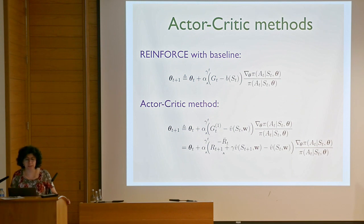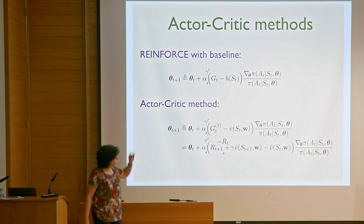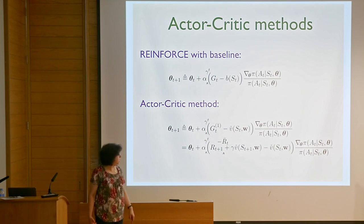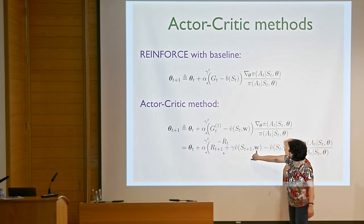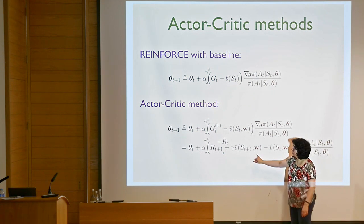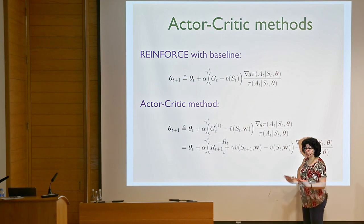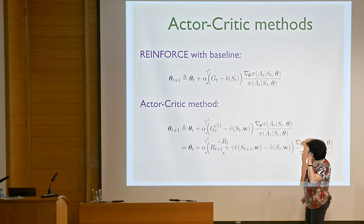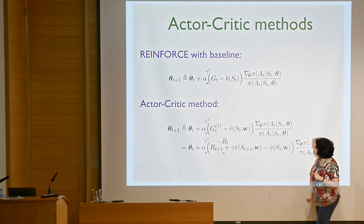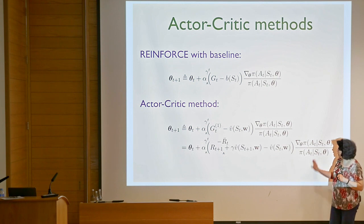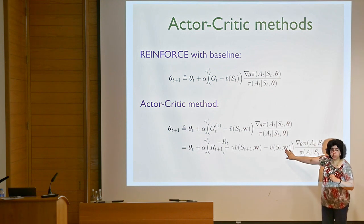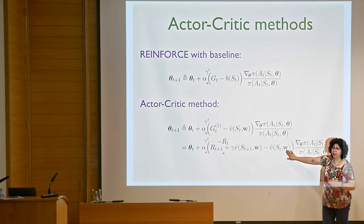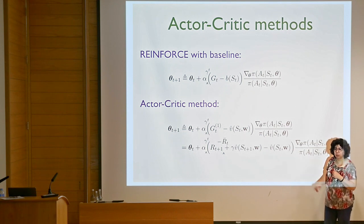In actor-critic methods, instead of just using the Monte Carlo return, we use the usual TD error. We parameterize the policy with one parameter vector and the value function with a different one, and we update both at the same time. Typically you have two different learning rates for these two updates. Conceptually, this pushes information from the value function into the policy—if you have a good estimate for the value function that reliably indicates the gradient direction, that helps the policy do better.